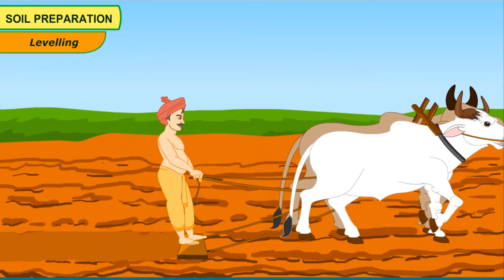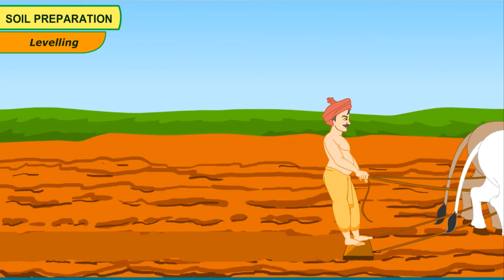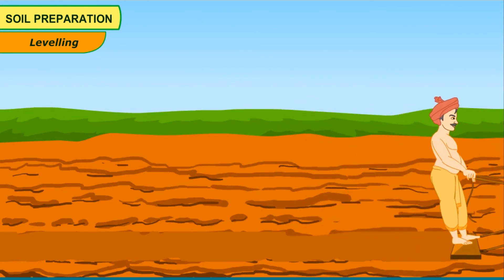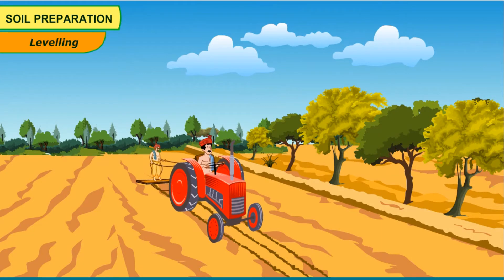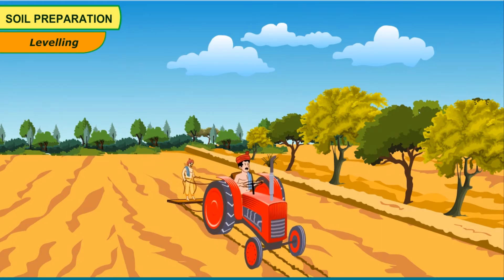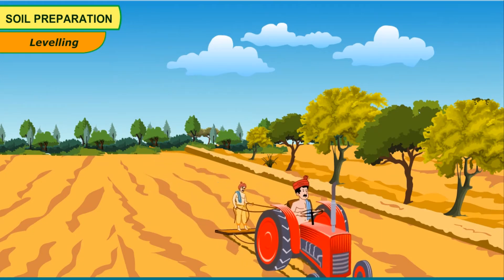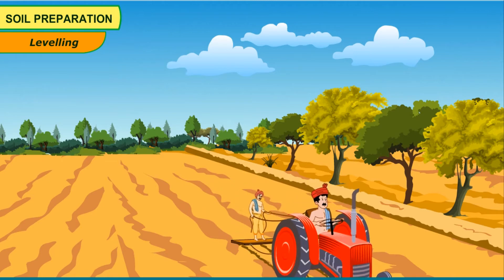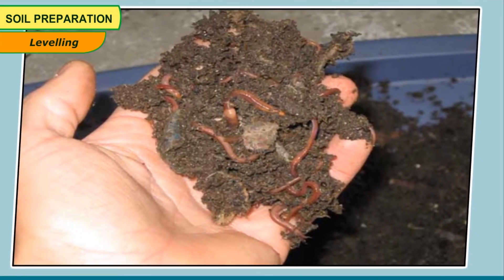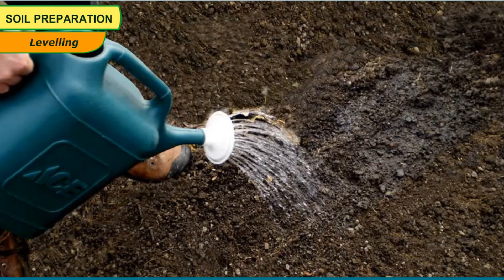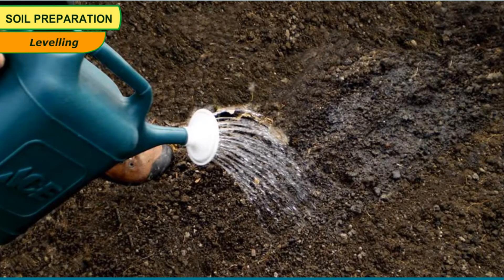Leveling. Even in ploughed fields, there are big pieces of soil known as crumbs. It is necessary to break these crumbs with wooden or iron planks which are known as levelers, and the process is known as leveling. At times, manure is added to the soil before tilling. The soil is watered after leveling and before sowing.